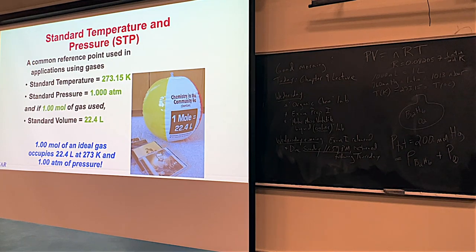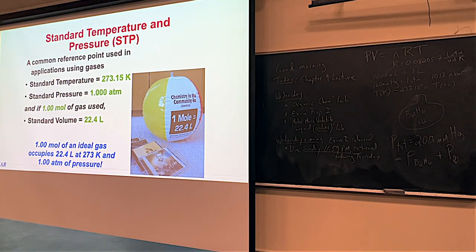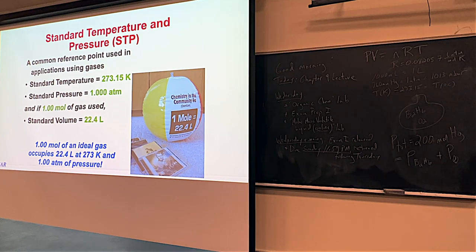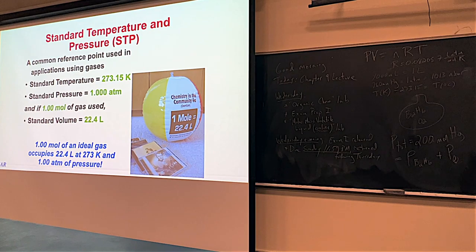STP means 273 Kelvin and 1 atmosphere of pressure. After this chapter, standard temperature is usually 298 Kelvin. For some reason, gas laws chose 273 K for STP. So this STP definition is only for the gas laws — most of the time standard temperature is 298 K.